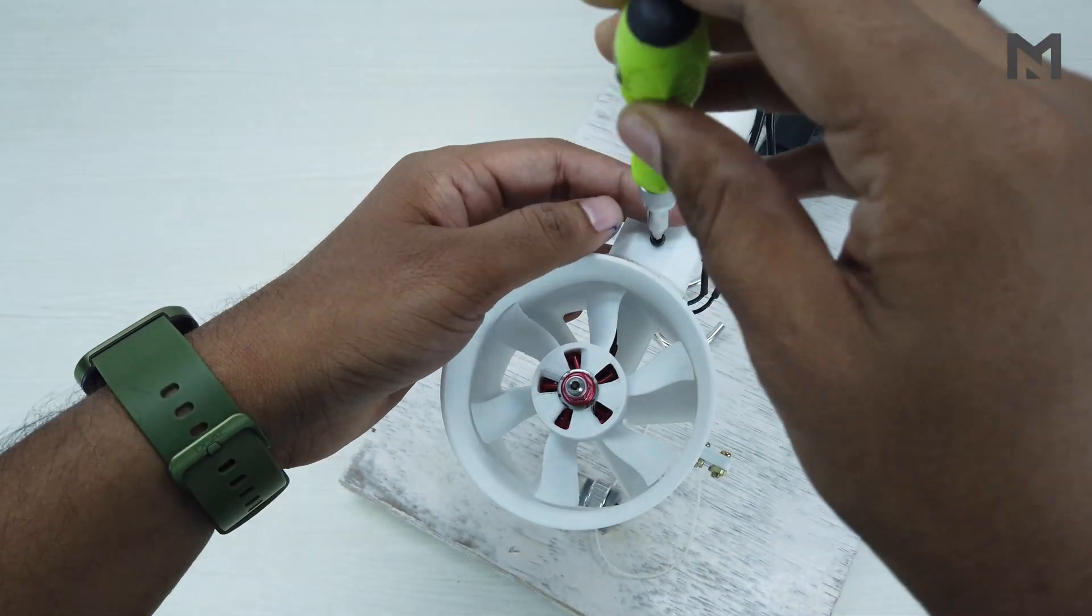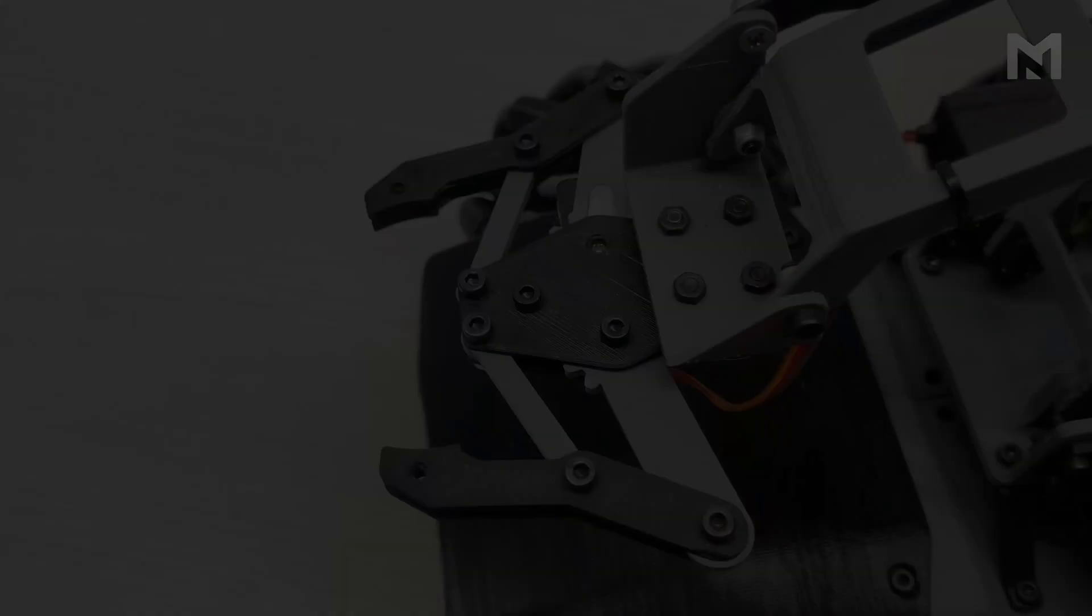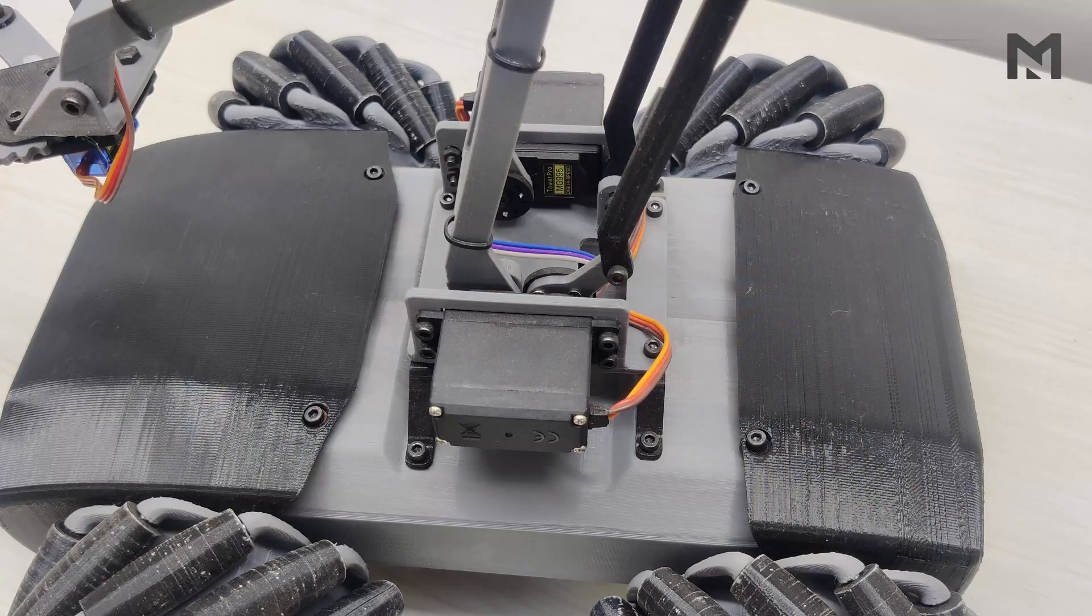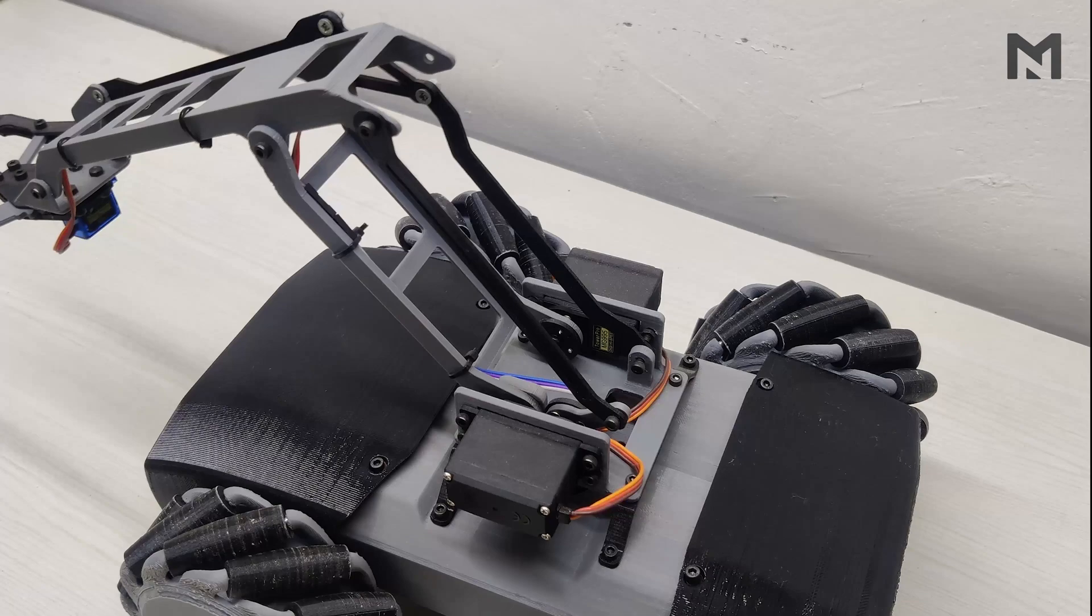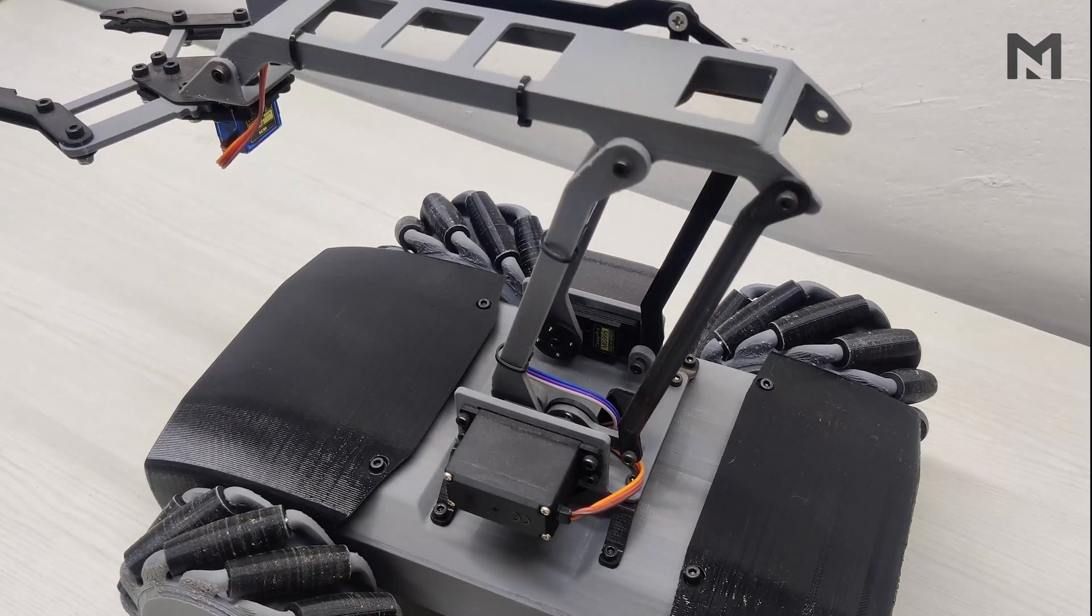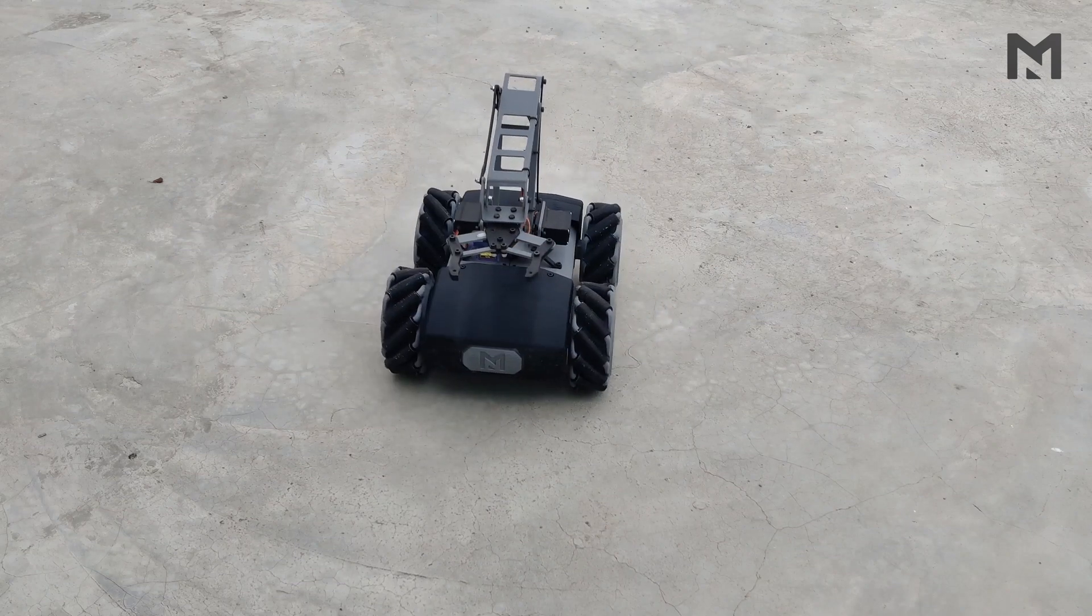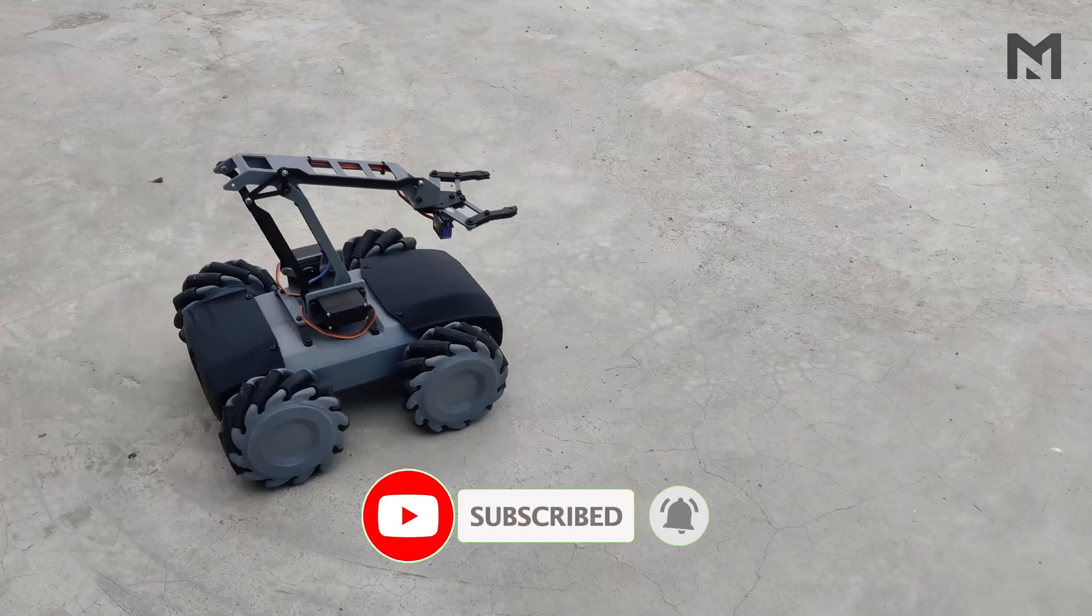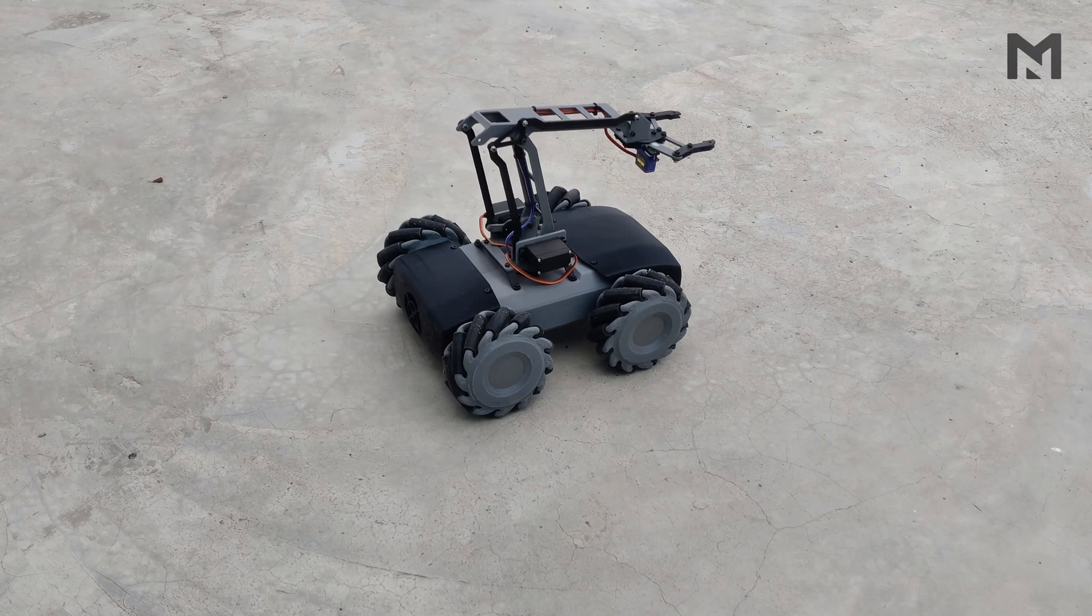While I disassemble this EDF, you can watch one of my cool robotic projects. This is a mechanical wheel robot which has a robotic arm mounted on its stock. This robot can perform various tasks while moving in all directions. It is wirelessly controlled through an android app. Do check out this video by clicking on the i button, and don't forget to subscribe.